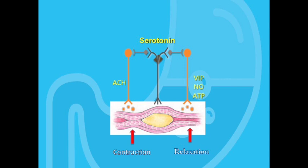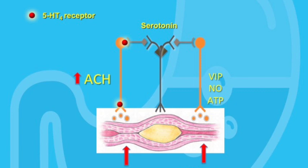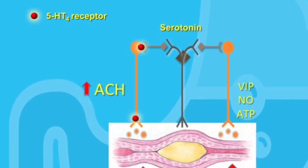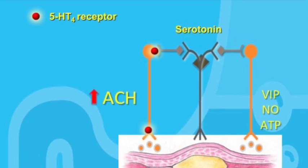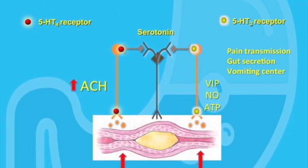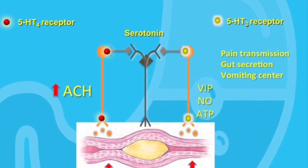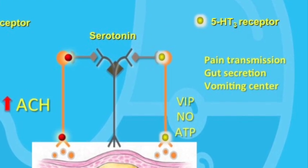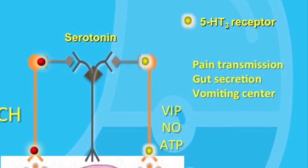Serotonin is probably one of the most important regulators of gut motility. It is released from the gut in response to various stimuli and has two important receptors: the 5-HT4 receptor and the 5-HT3 receptor. When serotonin binds to the 5-HT4 receptor, it greatly enhances ACH release from cholinergic nerves, thereby increasing smooth muscle contraction and forward gut motility. Conversely, when serotonin binds to the 5-HT3 receptor, it works more on the relaxation side of the reflex arc. The 5-HT3 receptor is also involved in gut secretion and pain transmission from the gut, which we will discuss when covering 5-HT3 receptor antagonist drugs in the next episode.